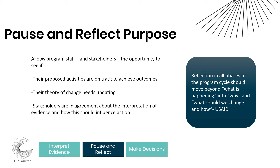If you're not on the right track, what needs to change? Are there places within your theory of change that need updating? Are there additional assumptions that need to be challenged? These are the types of things you can reflect on as a group. Also making sure that as you gather your stakeholders, are you still in agreement about the interpretation of the evidence you've found and how this might influence action? As the quote on the right notes, reflection in all phases of the program cycle should move beyond what is happening into why, and what could change and how.